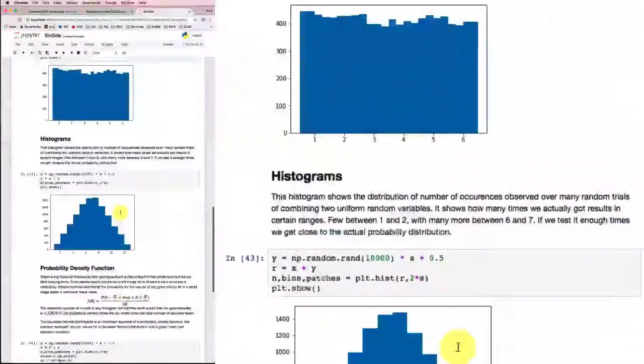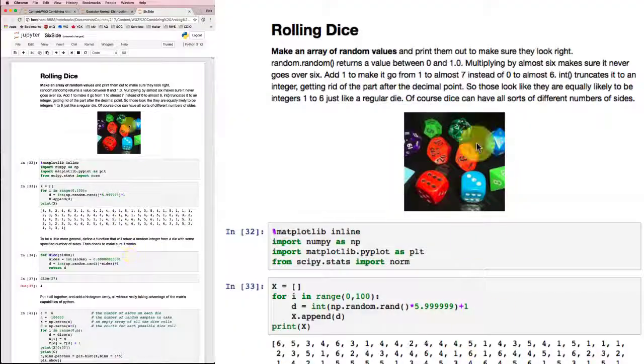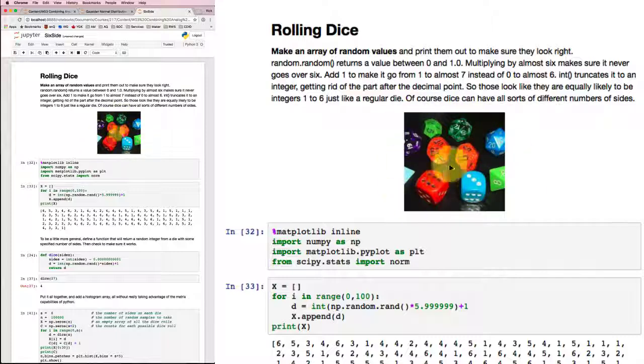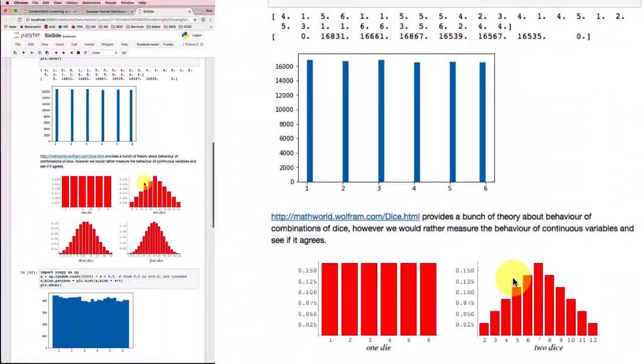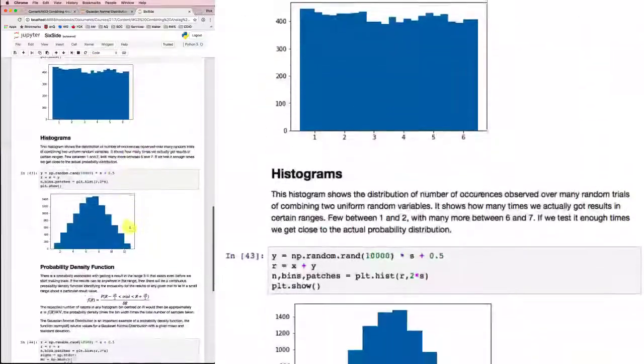So the moral of the story here is if we take any random variable, certainly a uniformly distributed random variable, and combine it with similarly uniformly distributed variables, we will tend to get this center peak. If we only have two, it'll be triangular like this. But the more random events we combine, the more we're going to get something that looks like a Gaussian distribution.